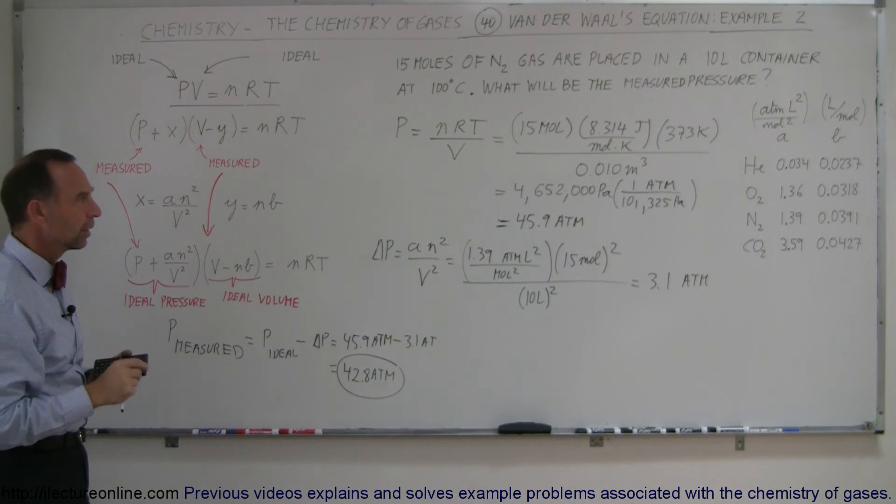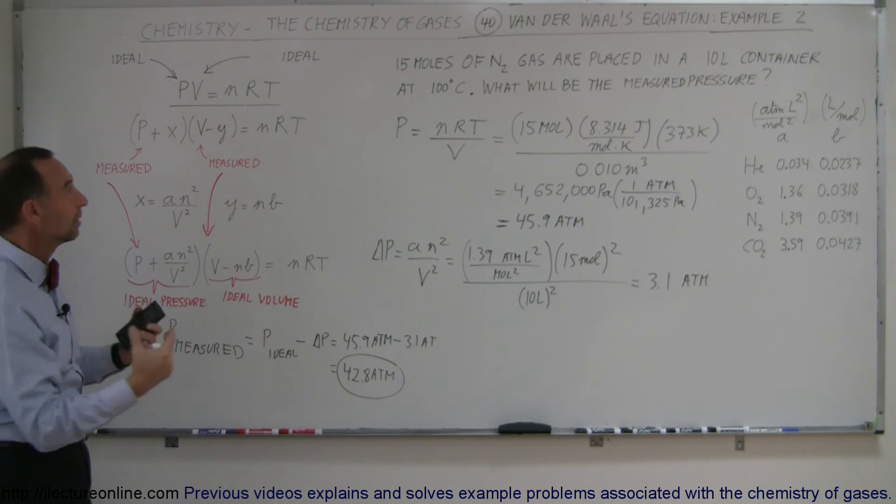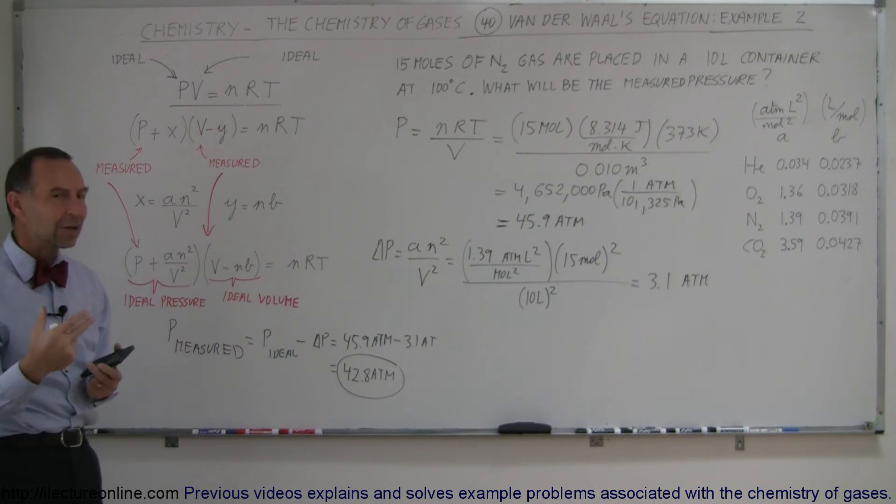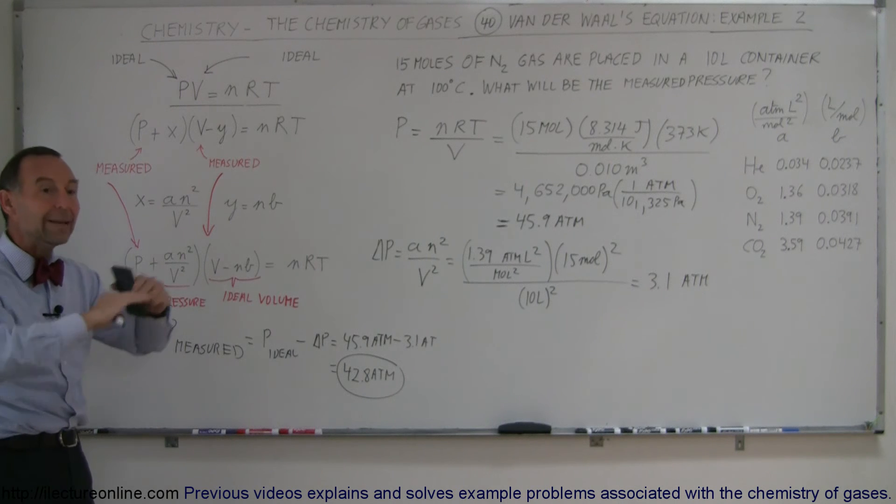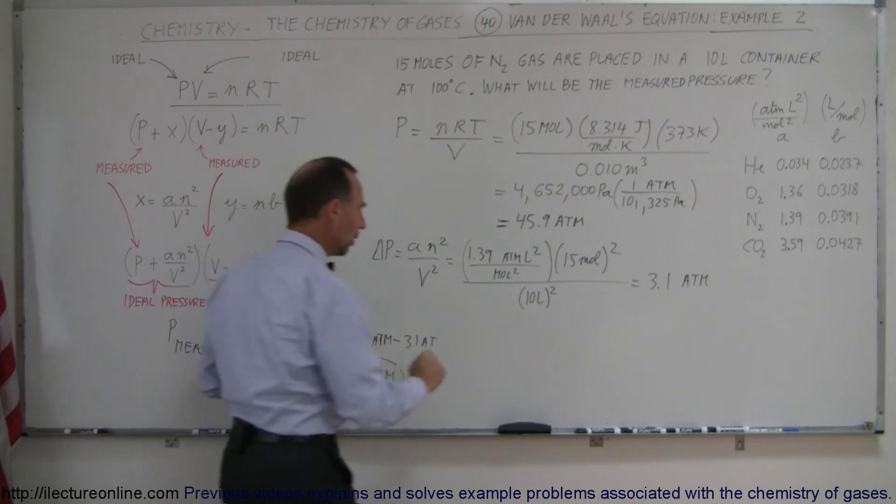How about the adjustment for the volume? We put the gas in a 5-liter container, and of course, that's the ideal volume. But what is the actual volume available to the molecules, the empty space left when you put all that gas in there because the molecules take up some space as well?